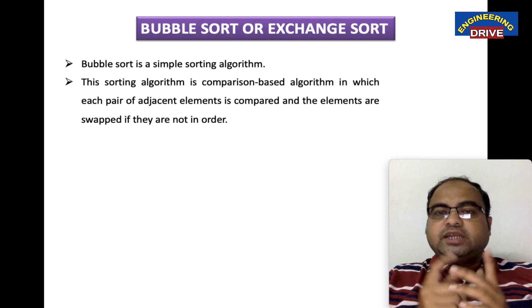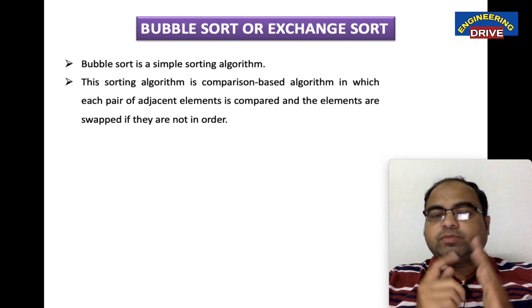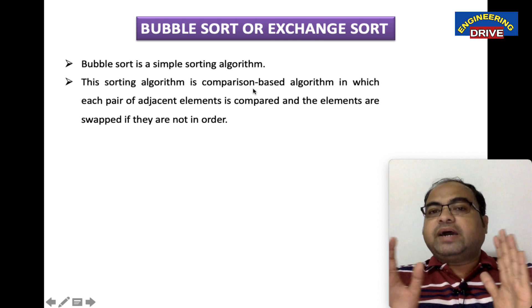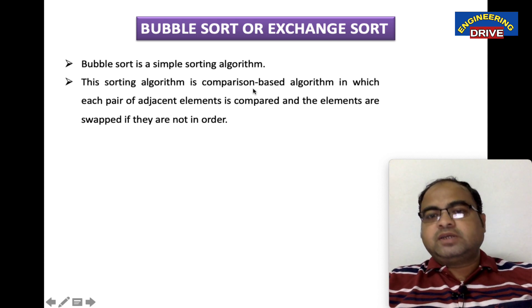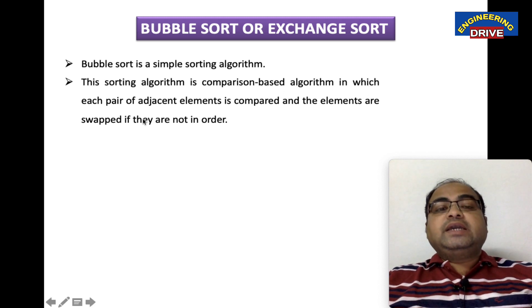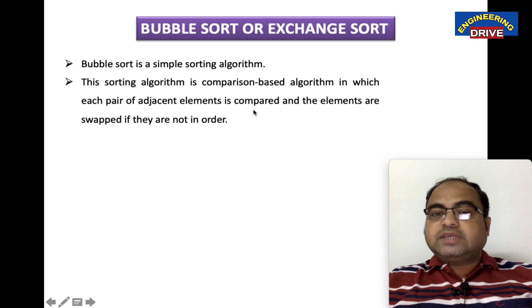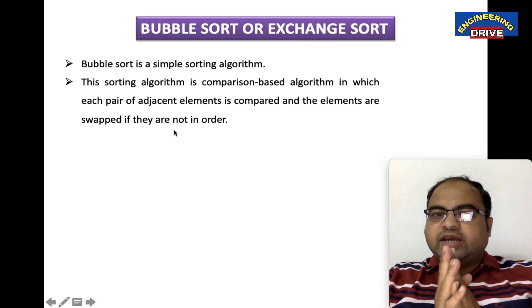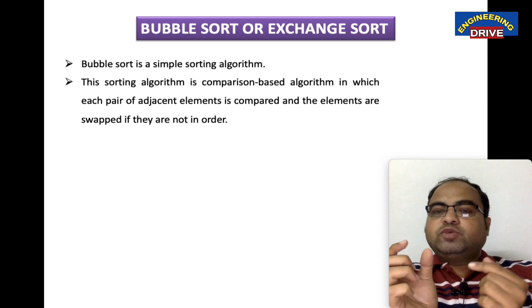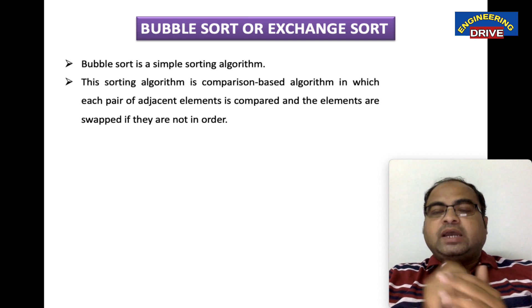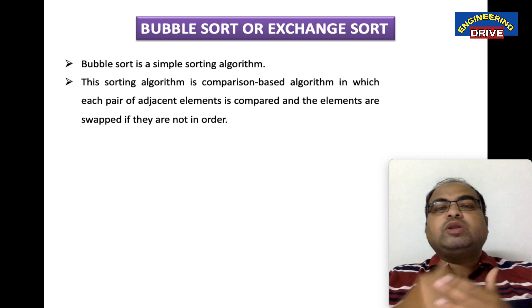What is the unique feature in our bubble sort method? This sorting algorithm is comparison-based, which is a similar feature. It is a comparison-based algorithm in which each pair of adjacent elements is compared and the elements are swapped if they are not in order. Here we are going to compare a set of two adjacent elements, and if they are not in order, we are going to swap them.